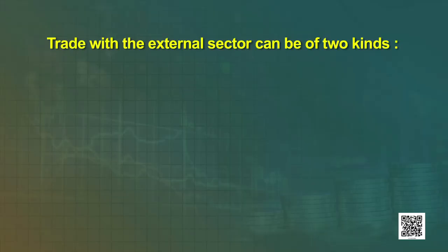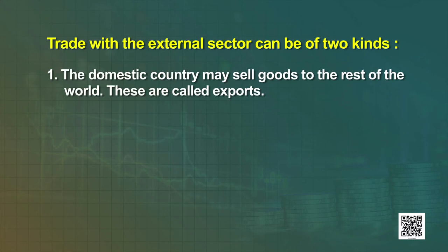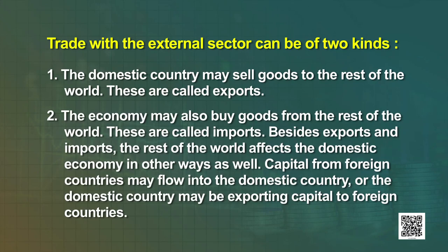We have studied three important sectors of the economy: firms, government, and household. As you know, all the countries of the world are engaged in external trade. Trade with the external sector can be of two kinds. One, the domestic country may sell goods to the rest of the world — these are called exports. Two, the economy may also buy goods from the rest of the world — these are called imports. Besides exports and imports, the rest of the world affects the domestic economy in other ways as well. Capital from foreign countries may flow into the domestic country, or the domestic country may be exporting capital to foreign countries.